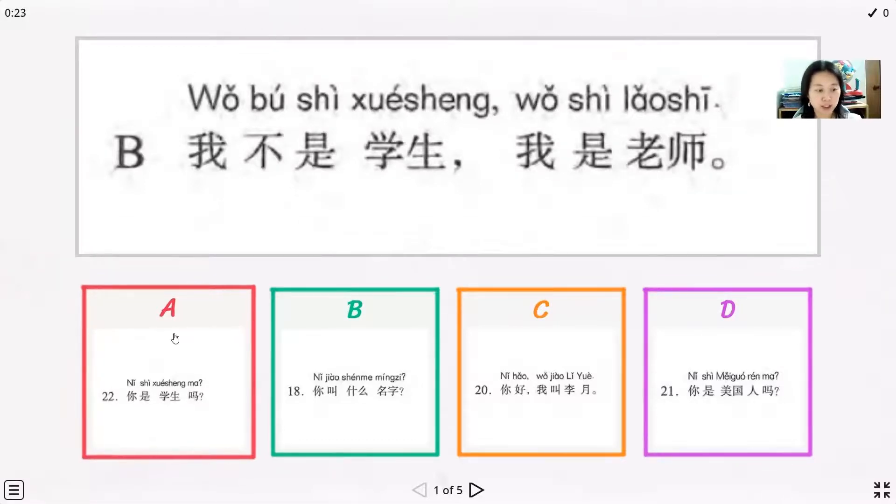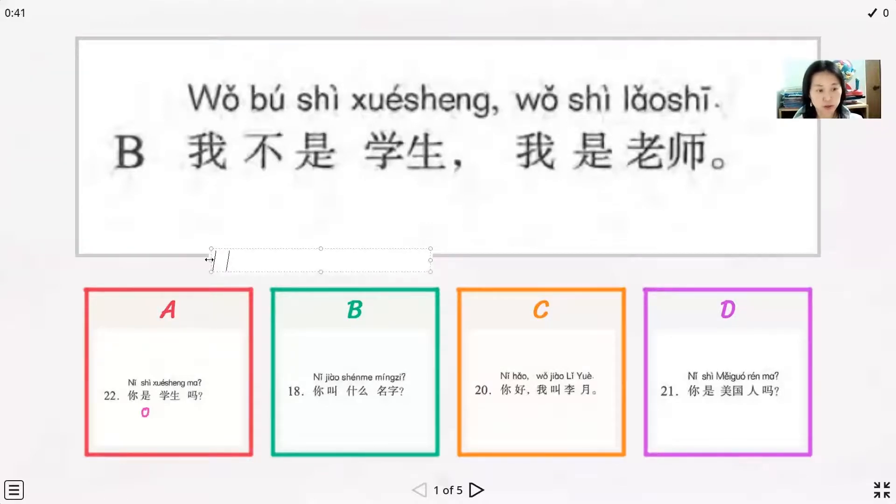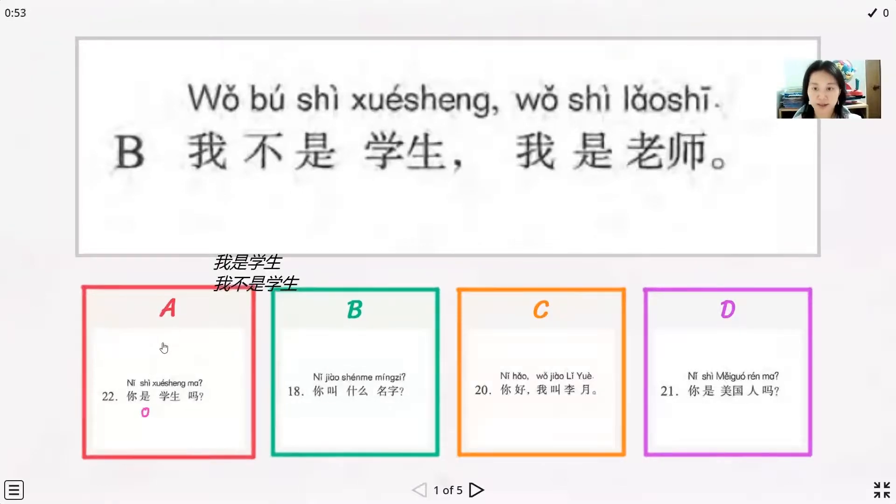This one just like an answer, so we need to find the questions. A, just ni shi xuesheng ma, are you a student? And this one we also to answer just like this. If we just ask you ni shi, and the shi, we also use wo shi xuesheng to answer about it, or wo bu shi xuesheng to answer about the question. So this one we can find the A is the correct answer.